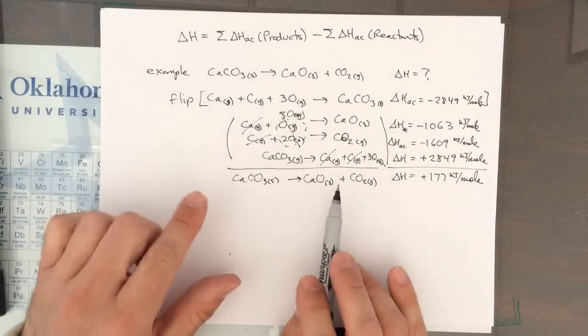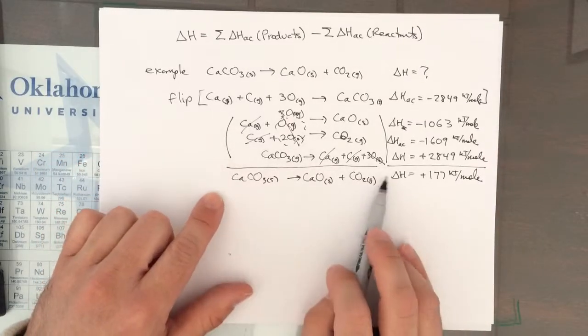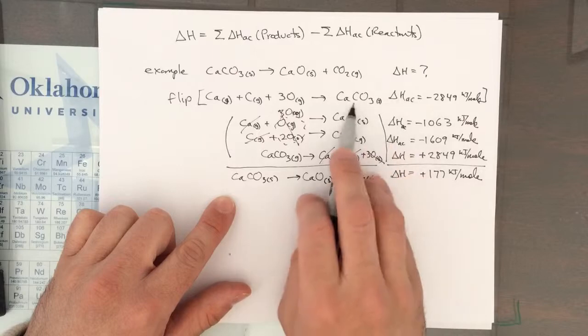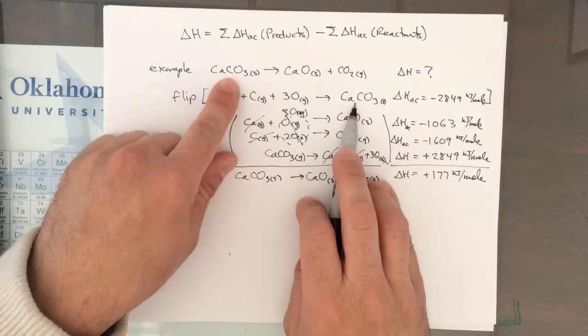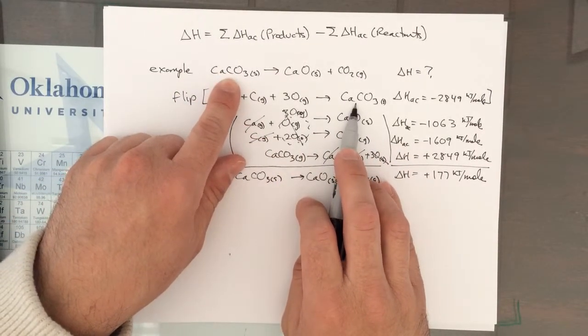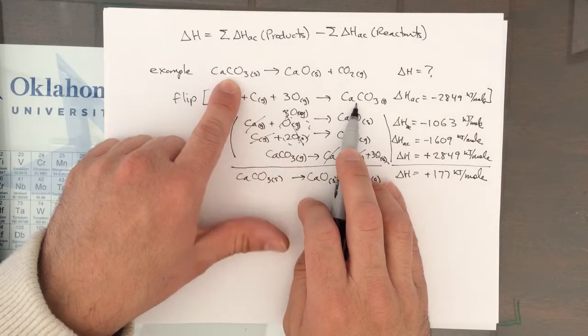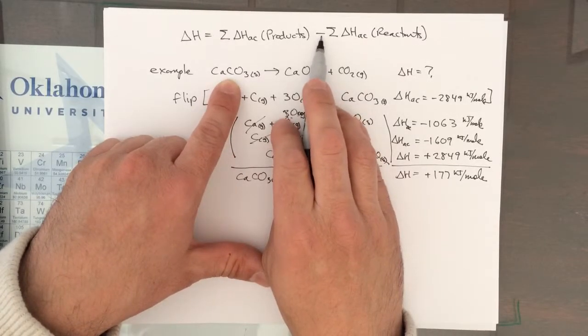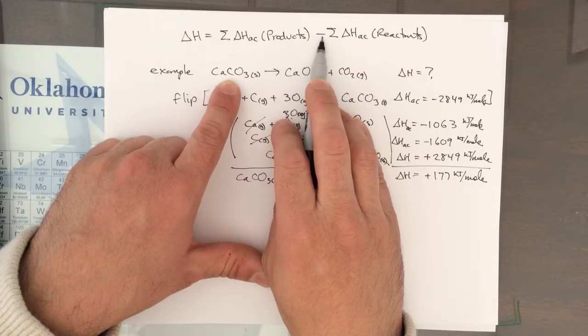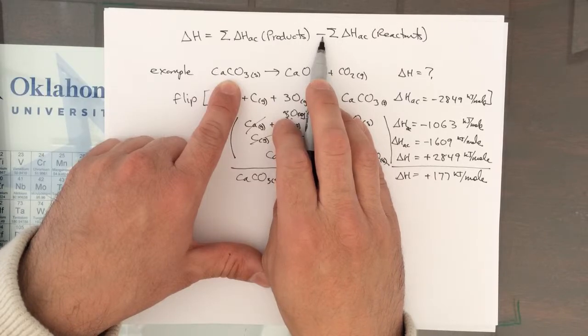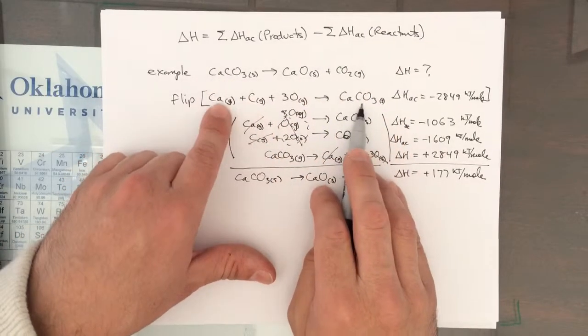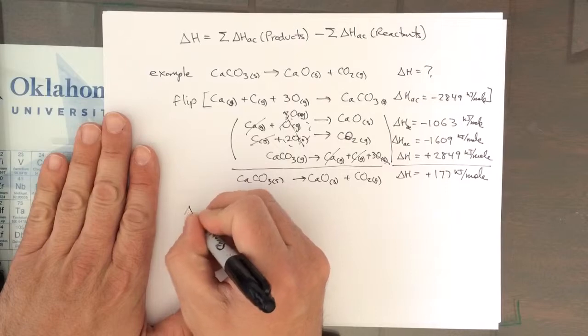Why is this important? Hess's law told us that we had to flip the delta H of the one that was the reactant. What this minus sign does here is it flips that sign of the delta HAC for the reactant. In other words, when you just plug this into the equation...